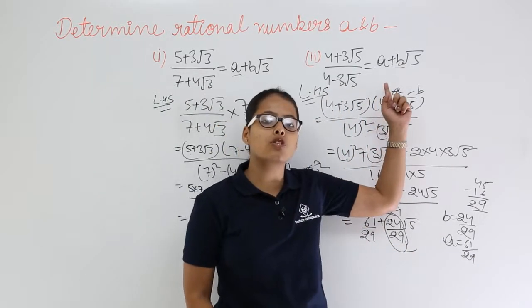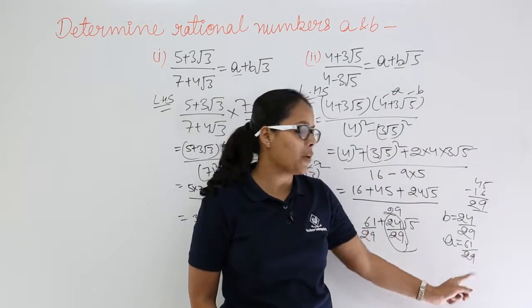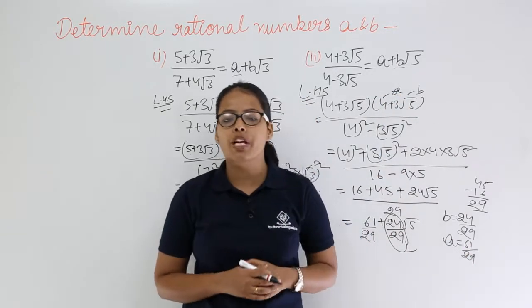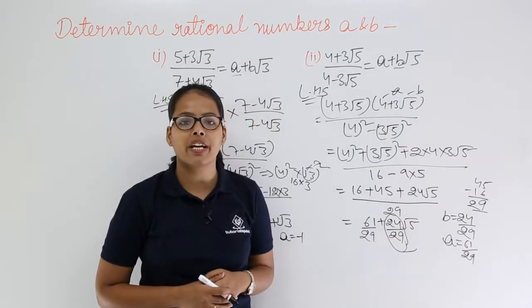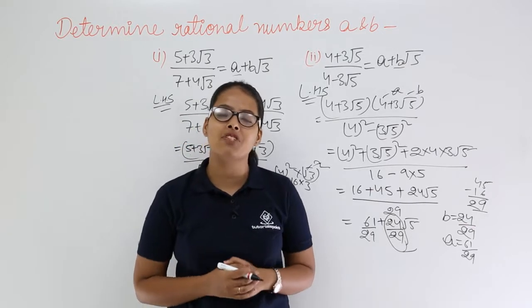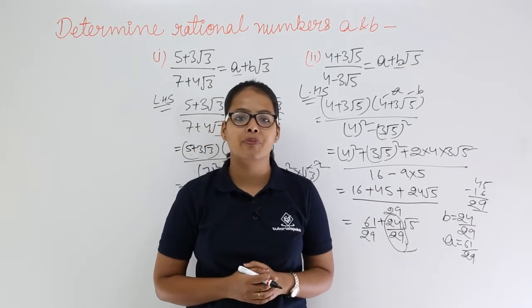Now compare the expression on the left hand side after simplification with the right hand side, which is a + b√5. The coefficient of √5 is b, and here it is 24/29, so b = 24/29. The constant value is a = 61/29. I hope there is no doubt here. I will be taking more problems in the next video lecture. Thank you.